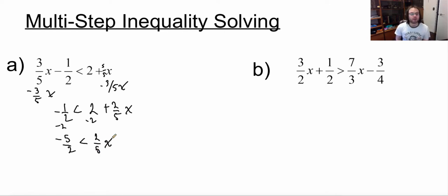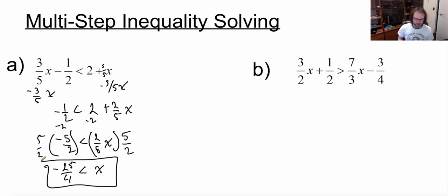Now looking across here, all we have to do is simplify for x, and if we notice, everything is positive, so we don't have to switch the sign. When I multiply, I'm going to multiply everything by 5 over 2. So I end up getting negative 25 over 4 is less than x, and that's it. This here is my inequality simplified, or solved.